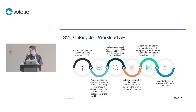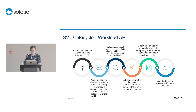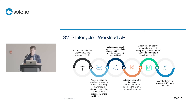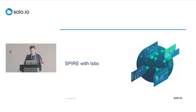That workload attestation process is very similar to what we just went through, but from the workload to the agent instead of from the agent to the server. The workload calls the Workload API — probably locally over a Unix socket on the same node. The agent initiates workload attestation by calling the workload attestors, which are pluggable. Those attestors use various kernel and user space details to discover information about the workload, returning workload selectors to the agent. The agent compares those selectors to its list of registration entries, and assuming there's a match, sends the matching SVID back to the workload. At that point, the whole system is bootstrapped and ready — all workloads have everything they need to authenticate each other.